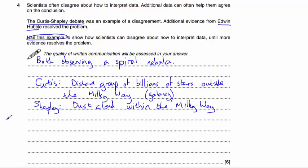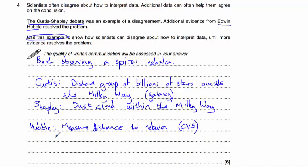The data available to them at the time couldn't rule between them on this matter. However, Edwin Hubble came along and used new technology to measure the distance to the nebula using Cepheid variable stars. They determined that the distance was much greater than anything in the Milky Way.